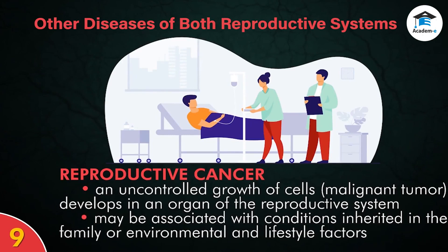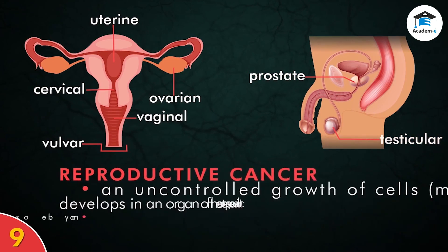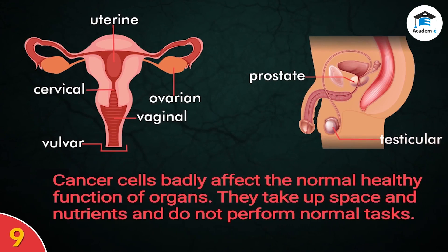Reproductive cancer is a condition in which an uncontrolled growth of cells — a malignant tumor — develops in an organ of the reproductive system. For females, it can be cervical, ovarian, uterine, vaginal, or vulvar cancer. For males, it can be testicular or prostate cancer. The cause of cancer is still being studied but may be associated with conditions inherited in the family or environmental and lifestyle factors. Cancer cells affect the normal healthy function of organs — they take up space and nutrients and do not perform normal tasks.